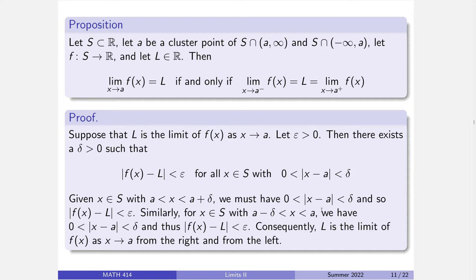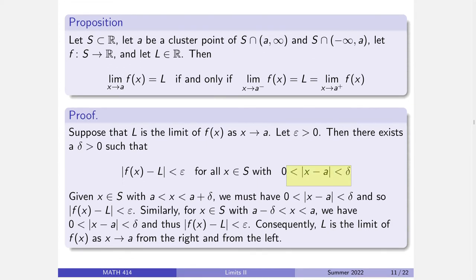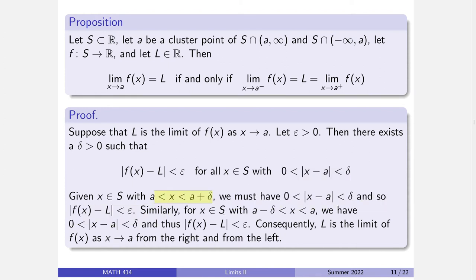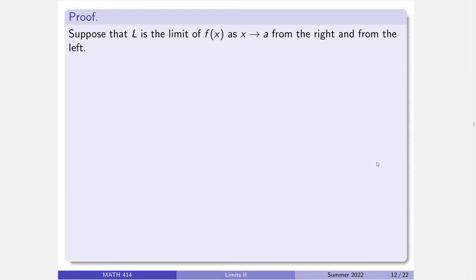We've established what it means for a limit to approach from the left and from the right, and we have an explicit epsilon-delta definition to work with. Now let's prove the classic calculus result: if the limit on the left exists and the limit on the right exists, and those two quantities are equal, then the overall limit exists — and in fact this is an if and only if. The converse — having left and right limits implies the full limit — is actually the more useful and trickier direction.